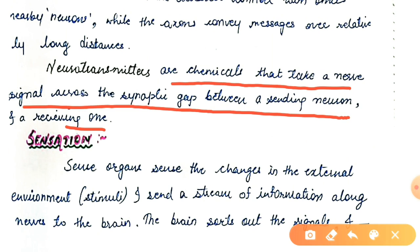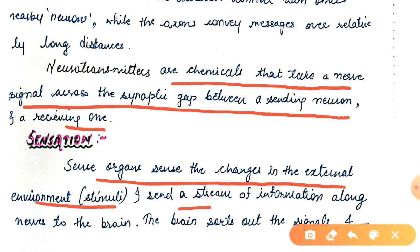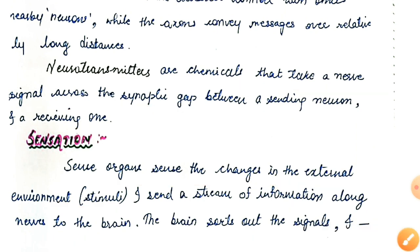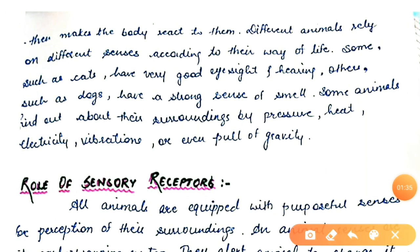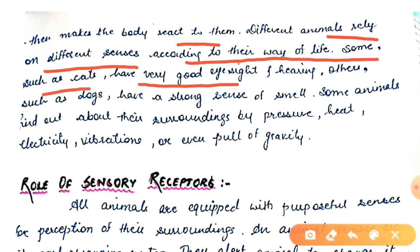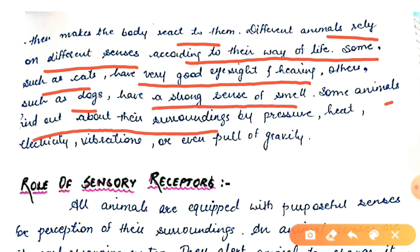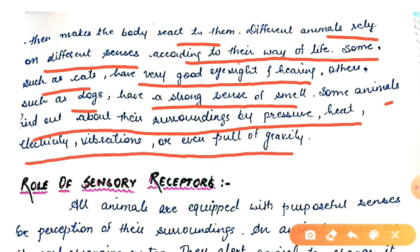Now, what is sensation? Sense organs sense the changes in the external environment — stimuli — and send a stream of information along nerves to the brain. The brain sorts out the signals and makes the body react to them. Different animals rely on different senses according to their way of life. Some such as cats have very good eyesight and hearing; others such as dogs have a strong sense of smell. Some animals find out about their surroundings by pressure, heat, electricity, vibrations, or even the pull of gravity.